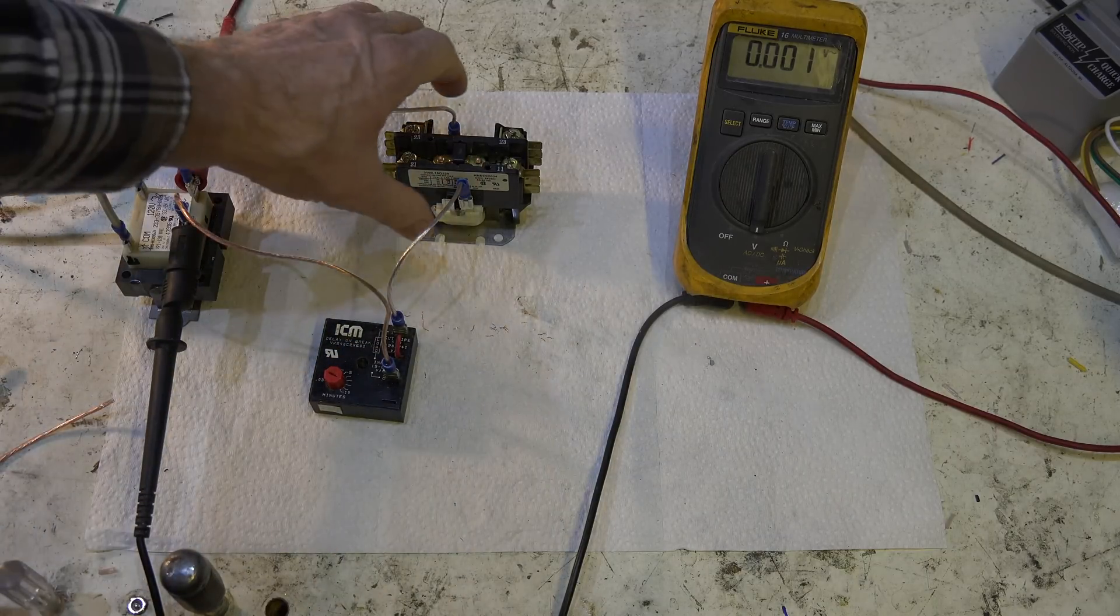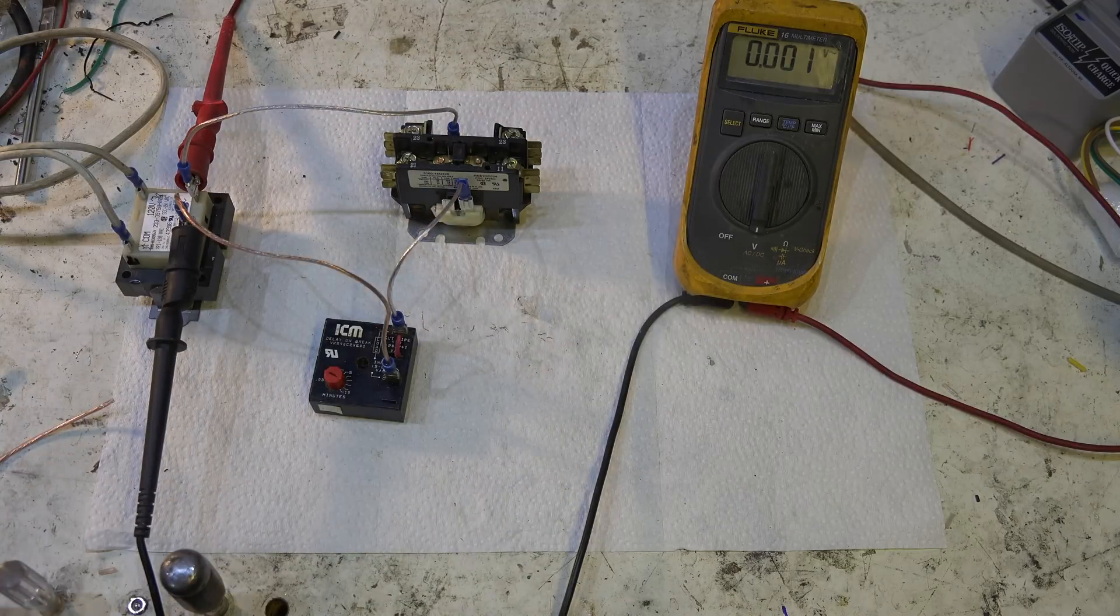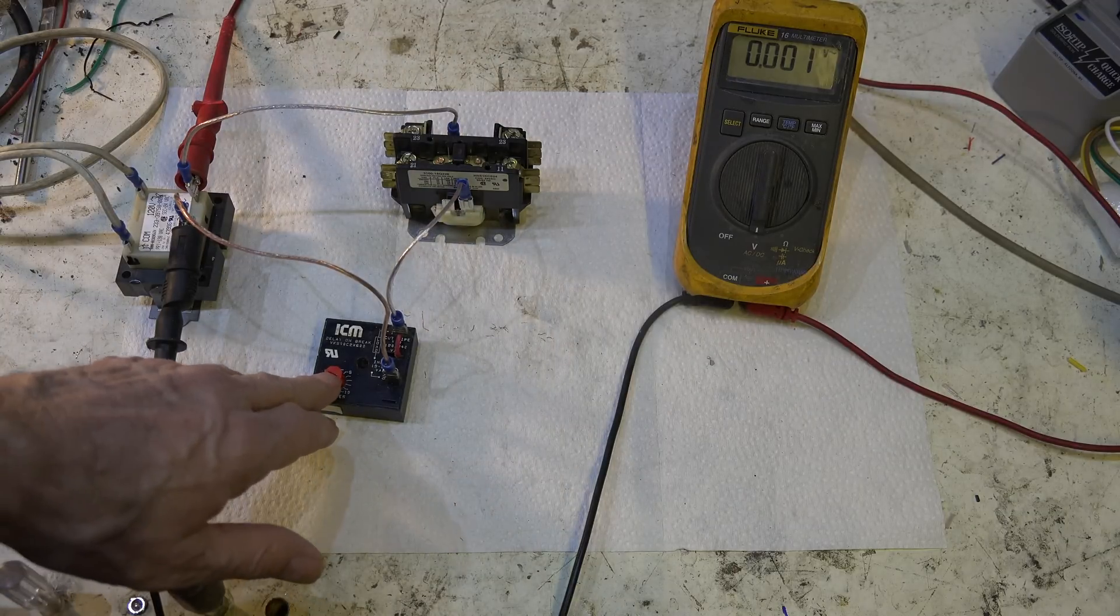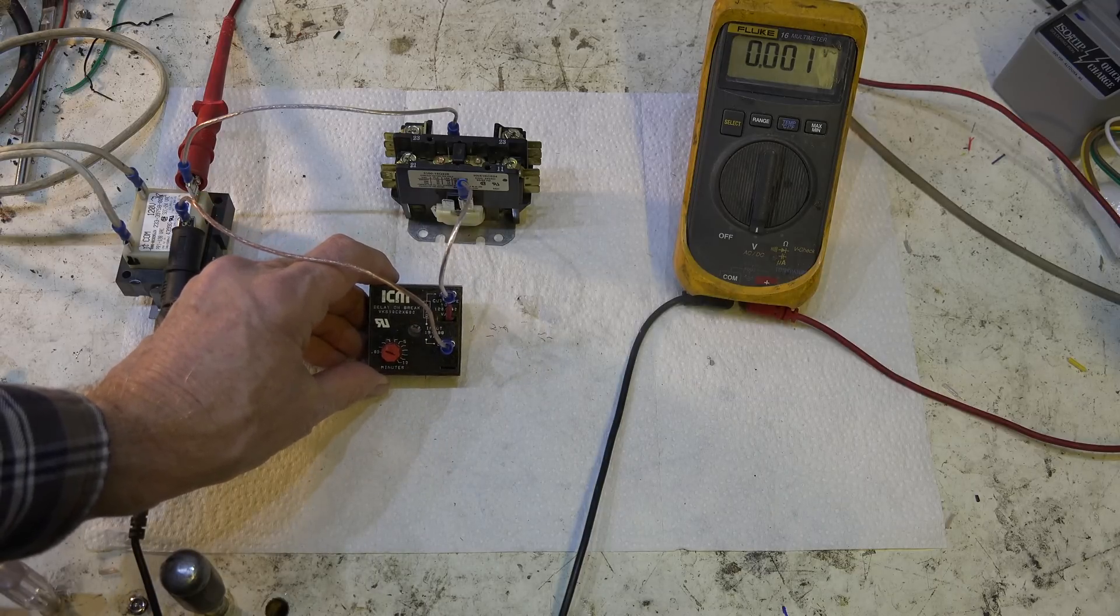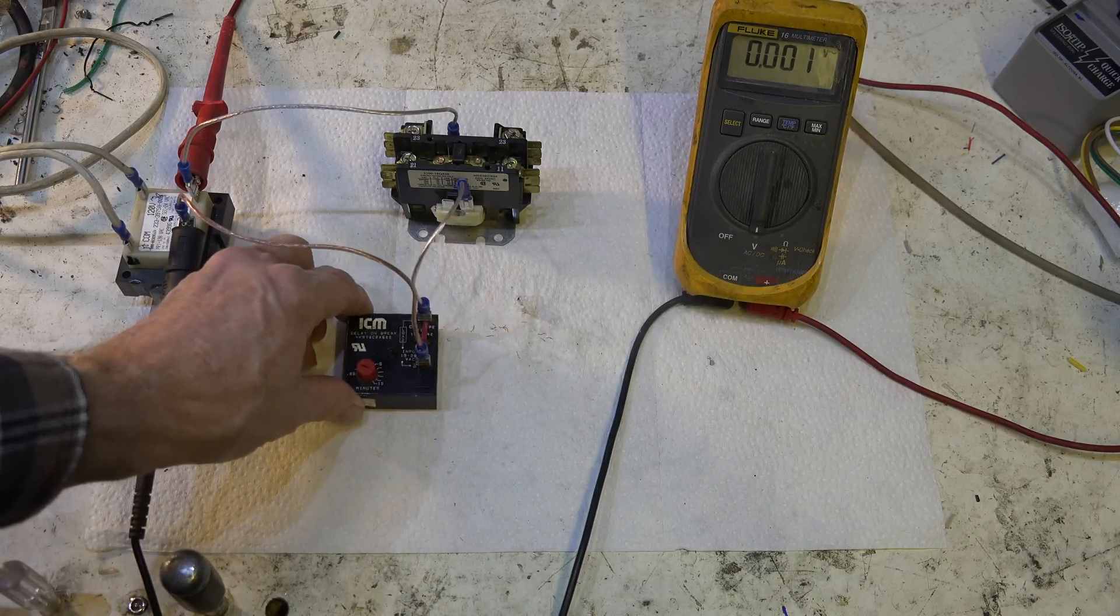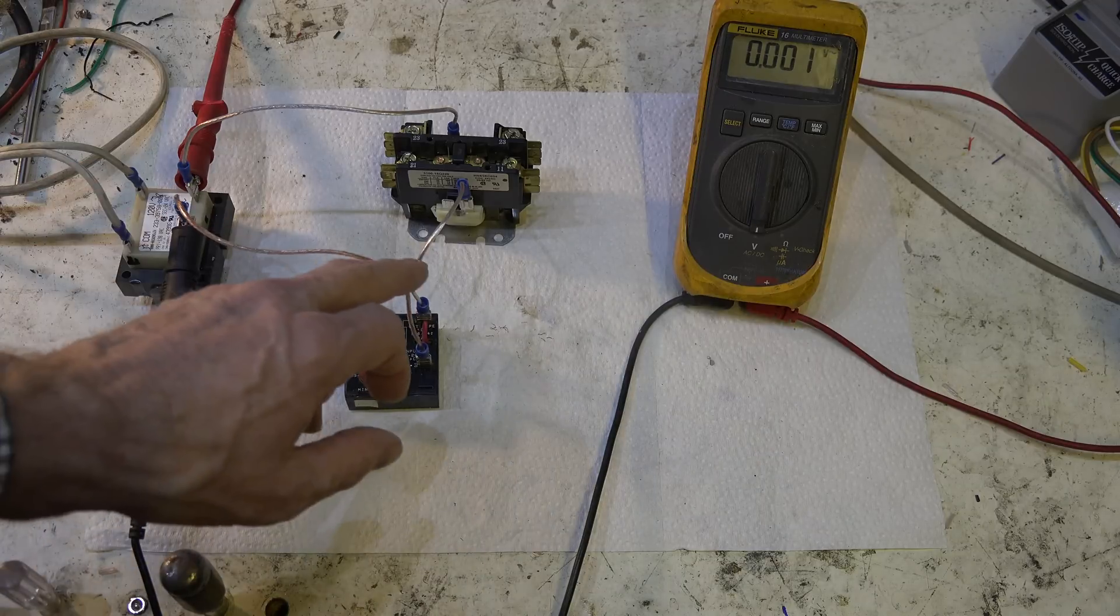This dial here is going to tell me what time delay there is. I've set it for about a minute or so. Now your thermostat would be in this line here. The way you'd actually wire this, I've eliminated the thermostat which would be right in here.